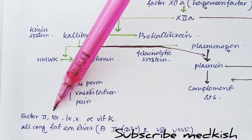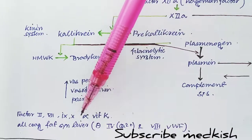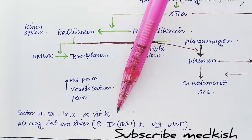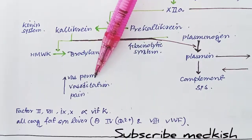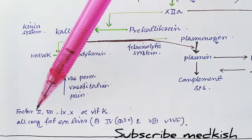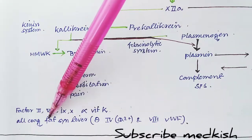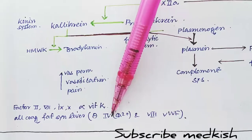Factors 2, 7, 9, and 10 depend on vitamin K for their activation. These factors cause increased vascular permeability, vasodilation, and pain. All coagulation factors are synthesized in the liver except factor 4, which is calcium.